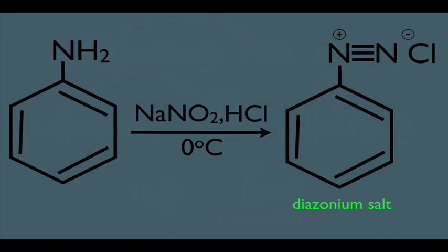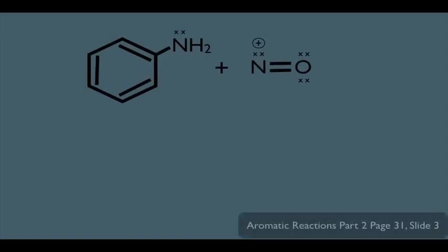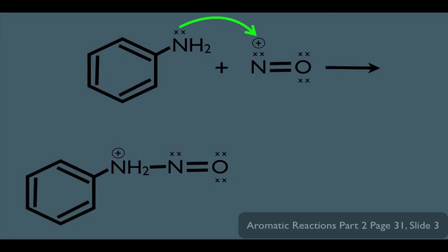Going back to the big picture, the NaNO2 reacts with the HCl to create this NO positive group. And it is this thing that is now ready to react with the benzene ring with the amine on it. The first step involves the NH2 group on the benzene ring being attracted to this positive and creating a bond between the two nitrogens, giving us this result. Take a few seconds to make sure you see the matching up of these two molecules.